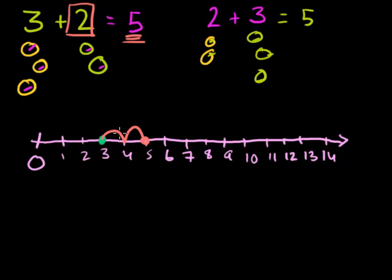If we have 3 lemons, we add 1 lemon, we have 4 lemons. We add another lemon, we have 5 lemons. And when you look at this version where you switch the order, we started at 2 and we're adding 3 objects to it. So we're going to add 3 to it: 1, 2, 3. And just like we expected, we got the same thing. We got 5 again.